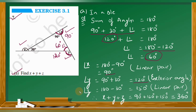So now adding x plus y plus z equals 90 plus 120 plus 150, which equals 360 degrees.